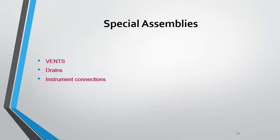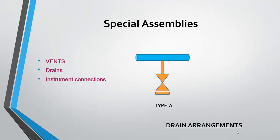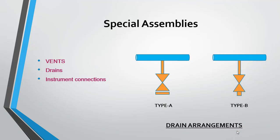The fifth area is special assemblies. The piping class also indicates the arrangement requirements for vents, drains, and instrument connections. For example, for drain arrangements, Type A shows a drain arrangement with blinds and Type B shows a drain arrangement with a plug. These are two different types of arrangements to be used for drains. Likewise, the piping class indicates arrangement requirements for vents and instrument connections as well.